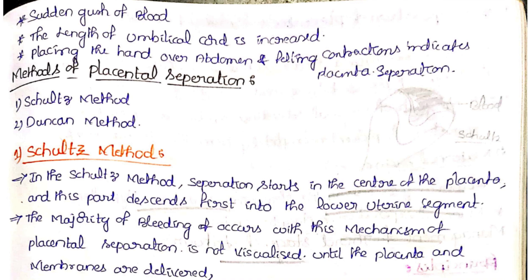The length of the umbilical cord increases after the placenta is separated and expelled out. Placing the hand over the abdomen and feeling a uterine contraction also indicates placental separation. These are the three signs of placental separation.